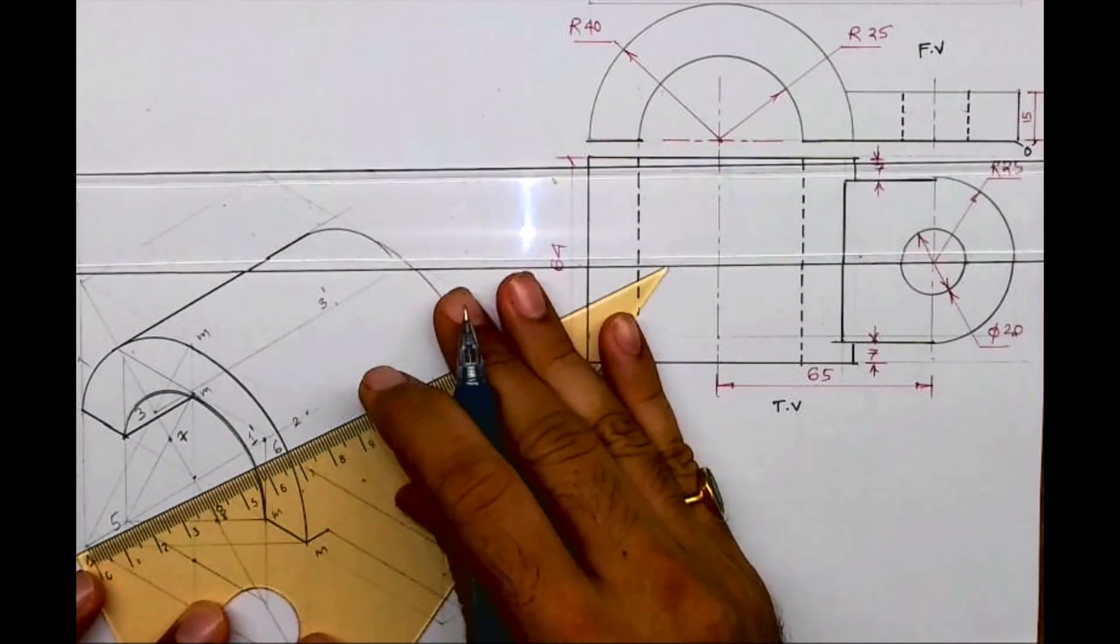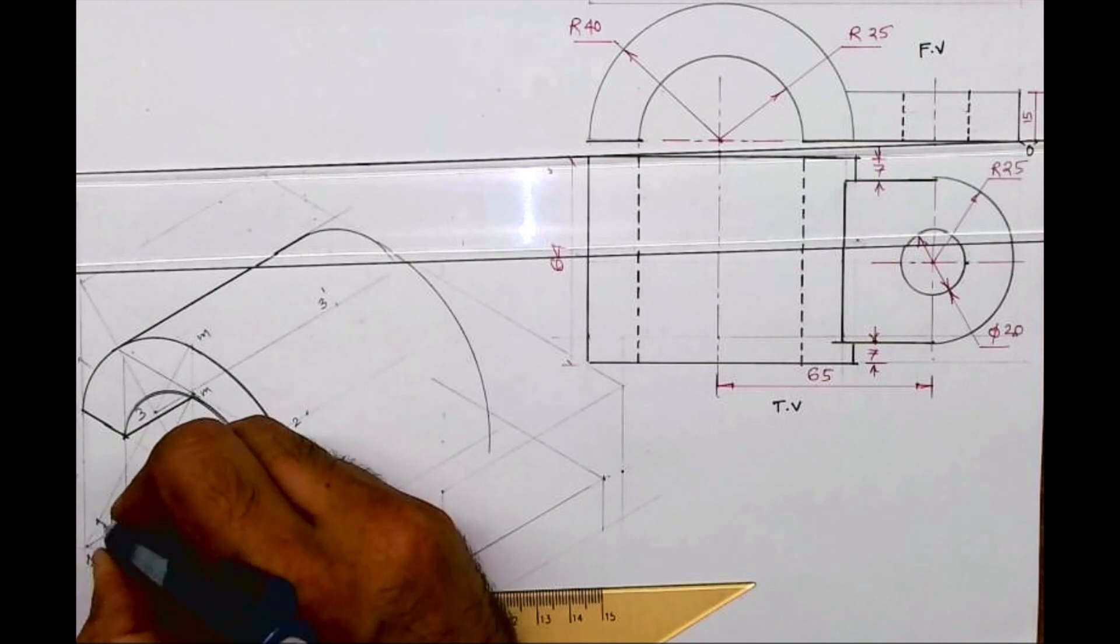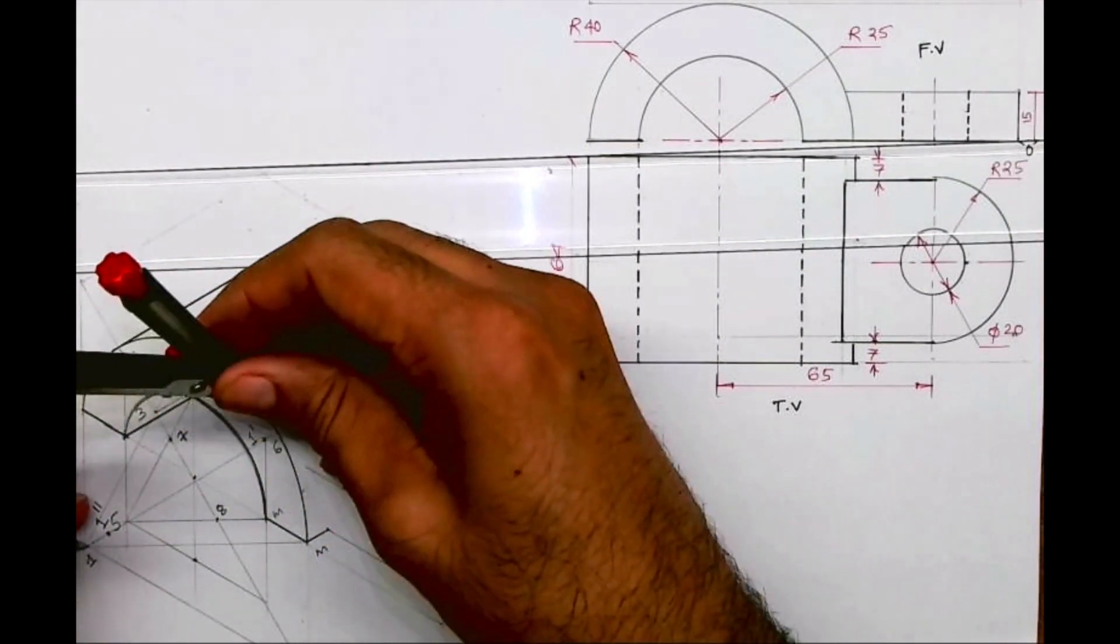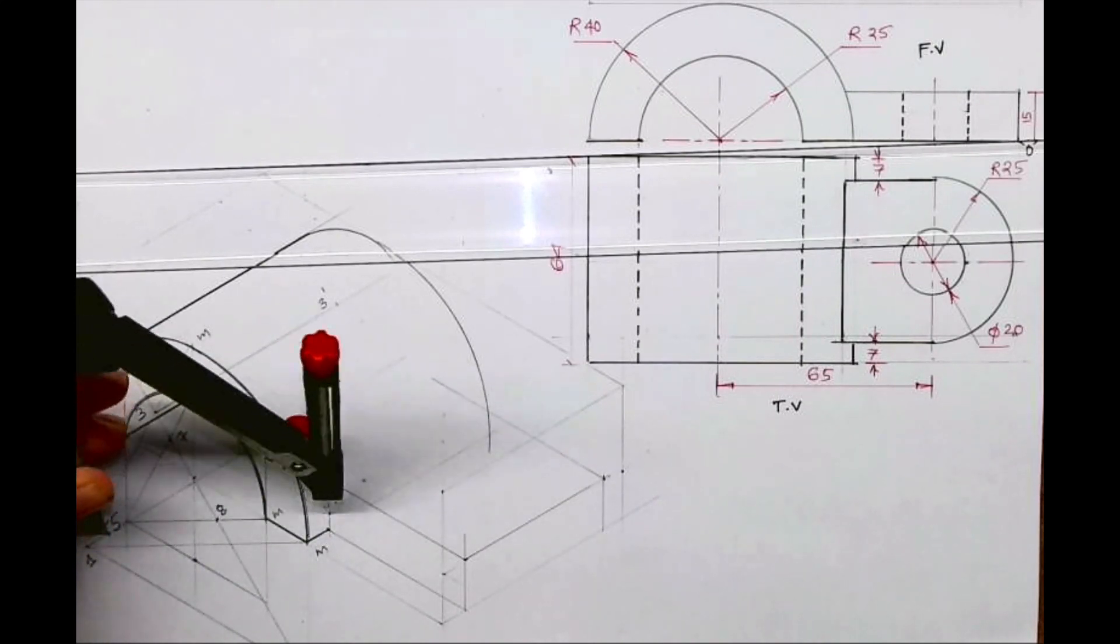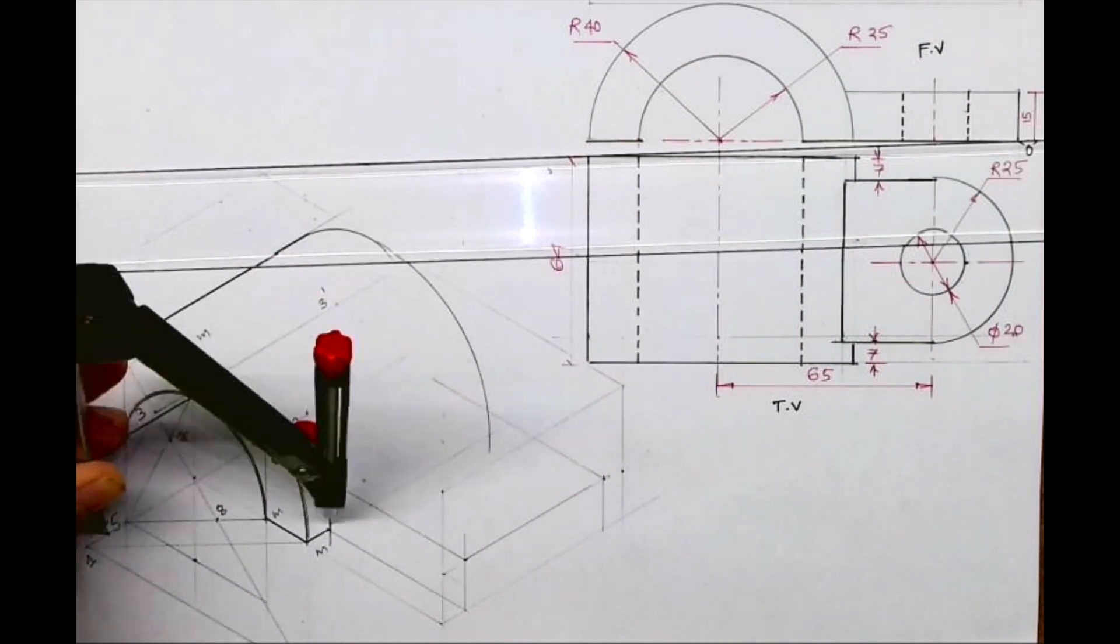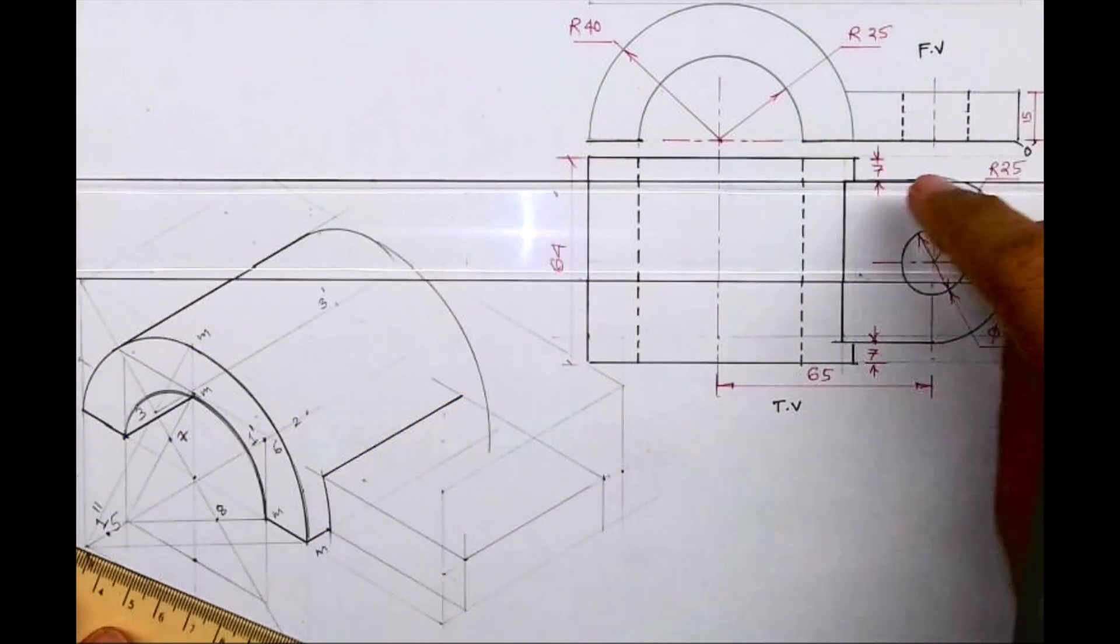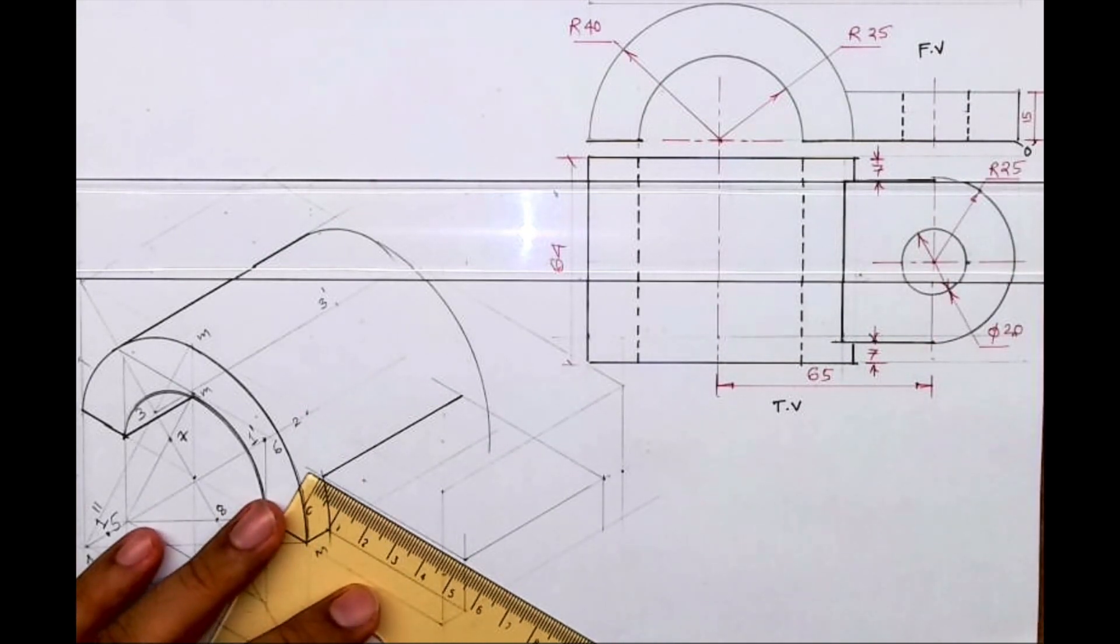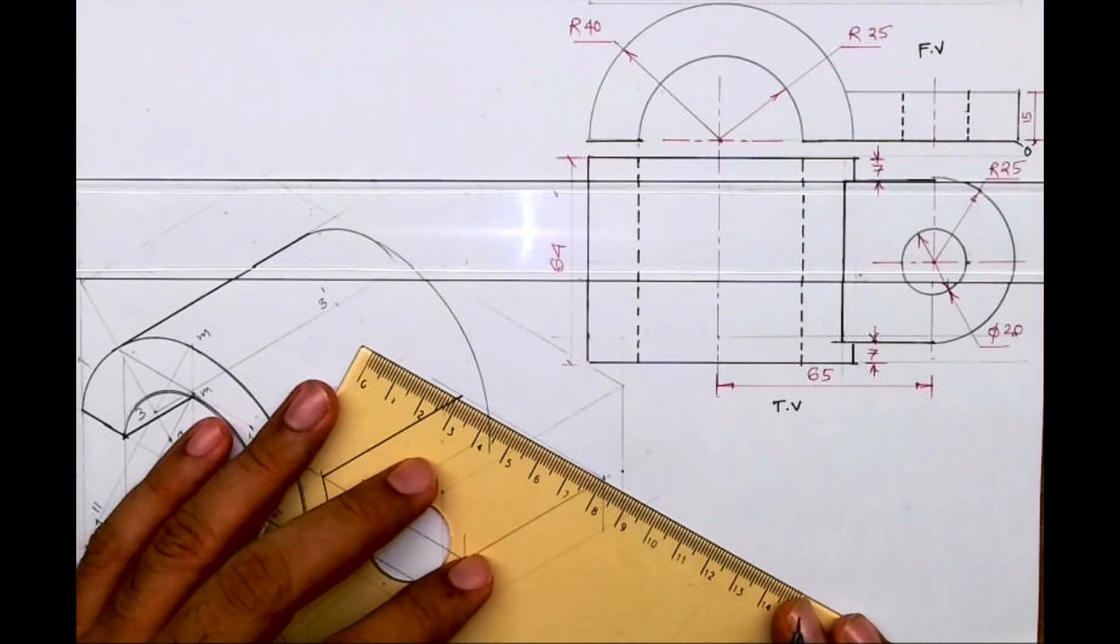So from point one I will go behind by 7, and I will mark that as one double dash. So take one to M and draw arc, and from one double dash you draw arc. So I will get this point. You extend this point. Now we need to draw circle. If you see radius is 25, and over here if you see, we are getting rhombus 50 automatically.